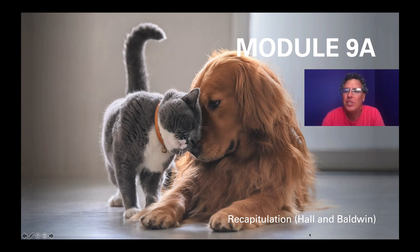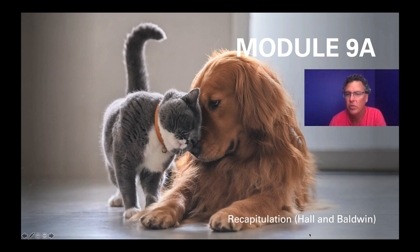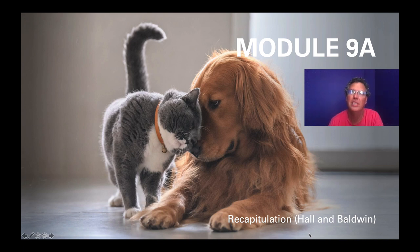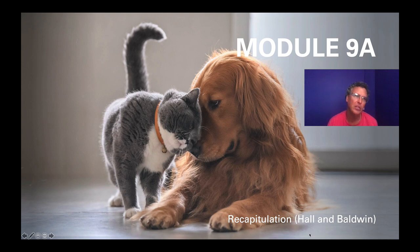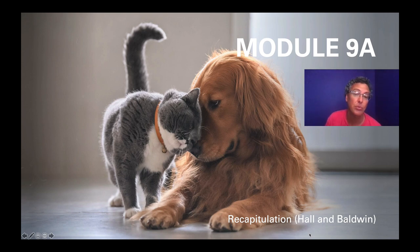So what we're going to do is start this section. I'm envisioning three lectures as part of this week's lectures. This one will really focus on the notion of recapitulation — whether individual development is a microcosm of species development. We'll talk about G. Stanley Hall and Mark Baldwin. Then there'll be a 9B and a 9C to get us through Chapter 13.